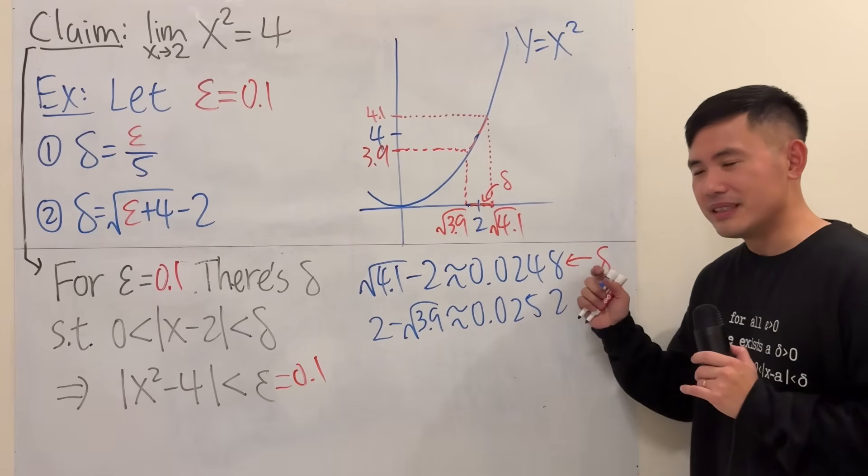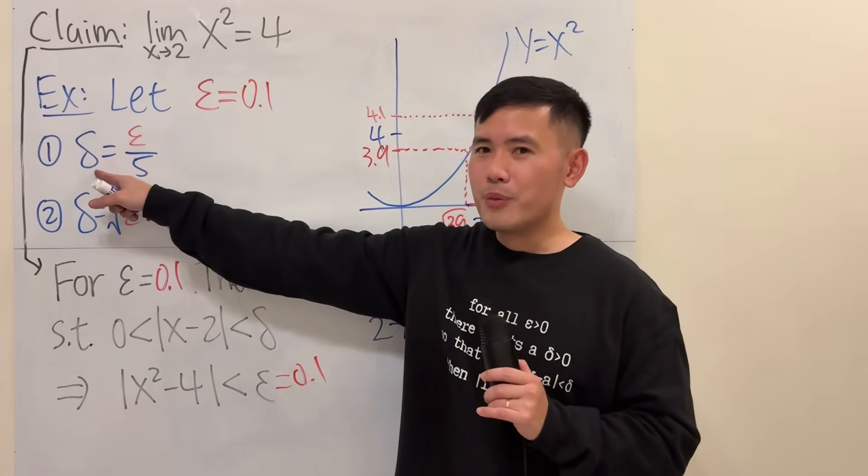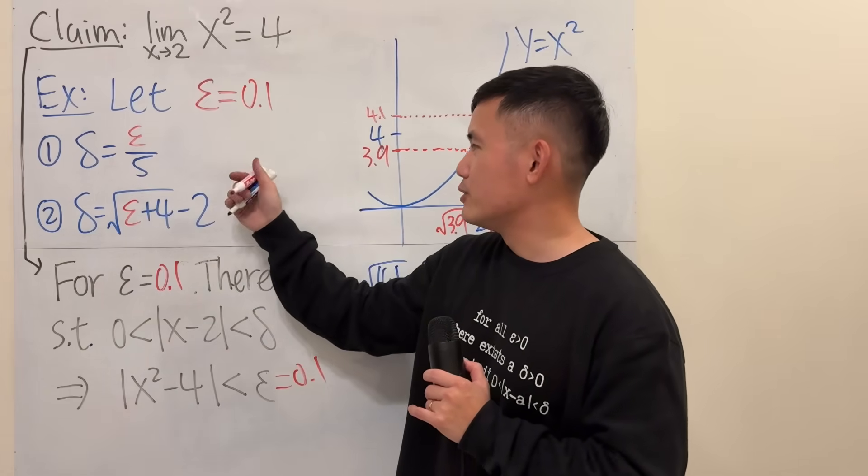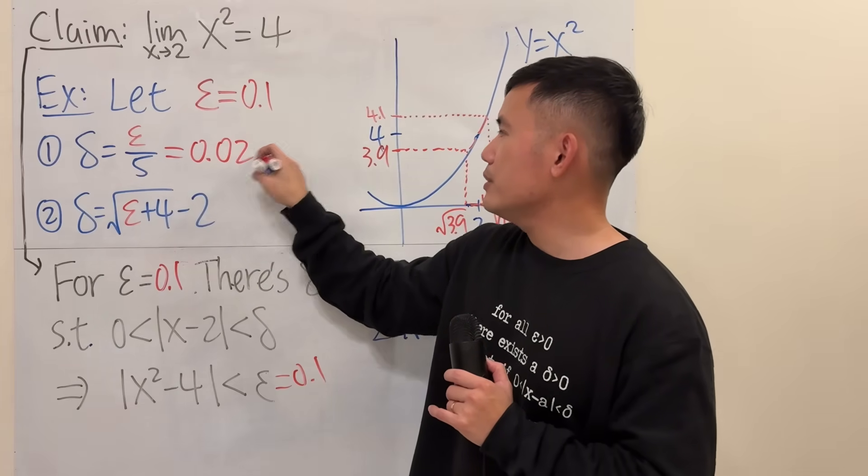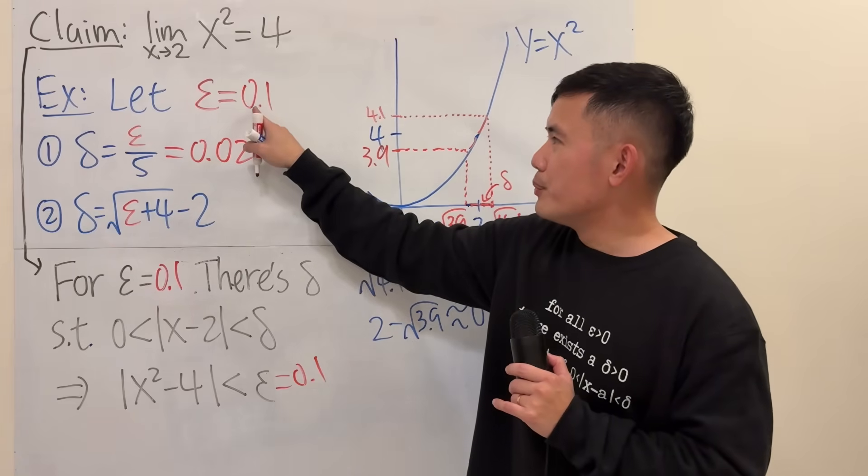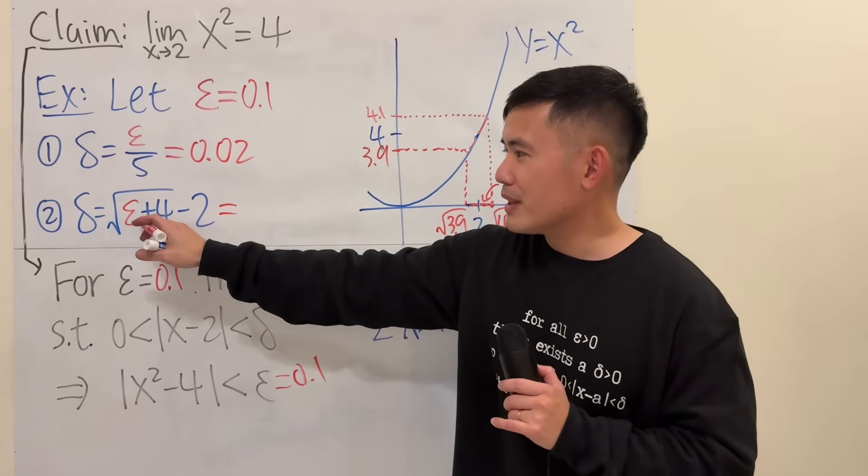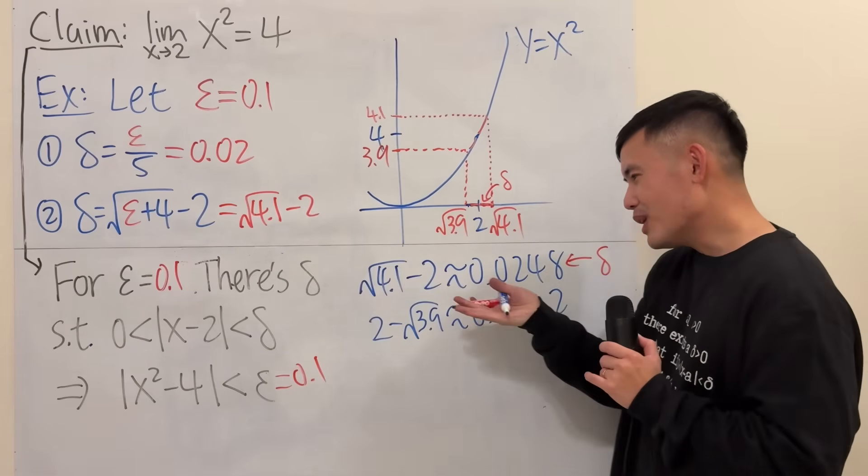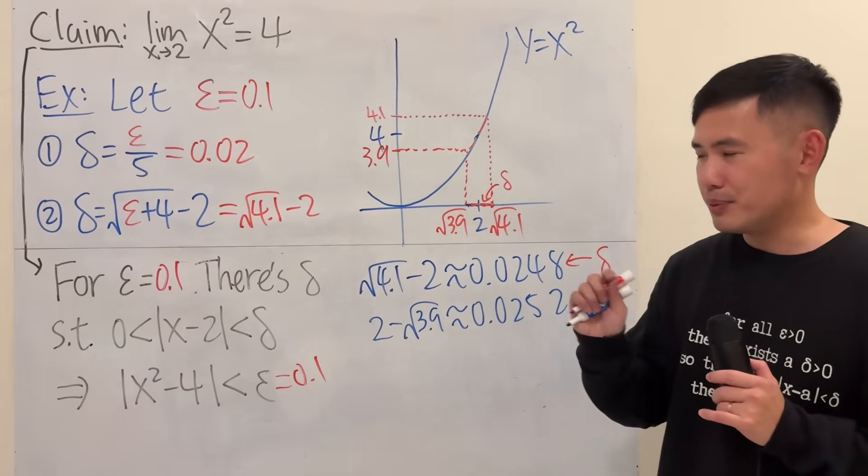So this is the delta from the picture. Now let's go back to the formula. First formula, like the fast way, we have epsilon over 5. Epsilon is 0.1, so you will just get 0.02. Okay, and now if you put 0.1 here, guess what? You get √(4+0.1) - 2, which is √4.1 - 2. And this is what I mean by this is the best possible delta that you can come up with. It's precise.